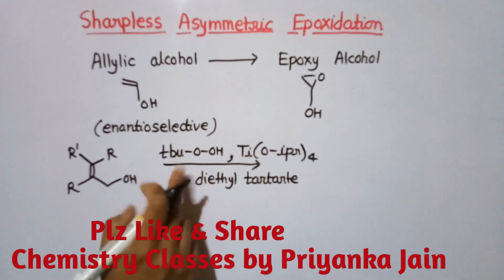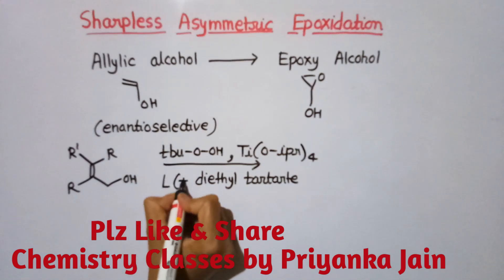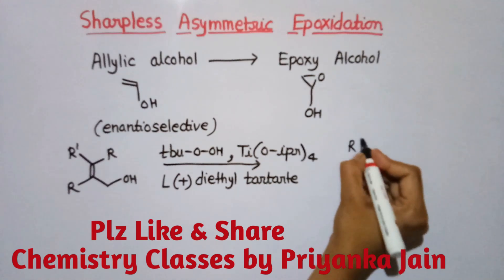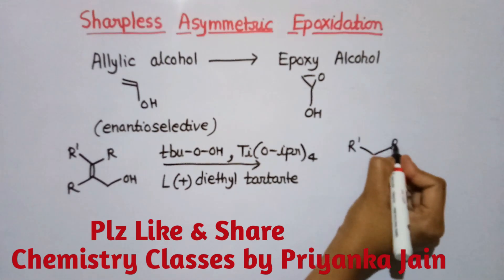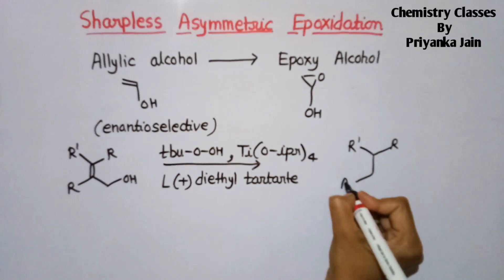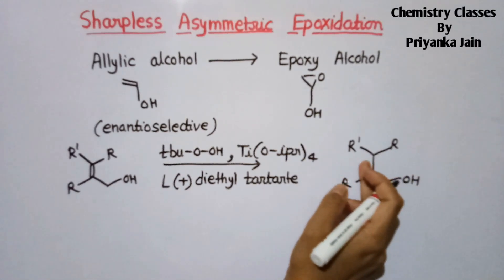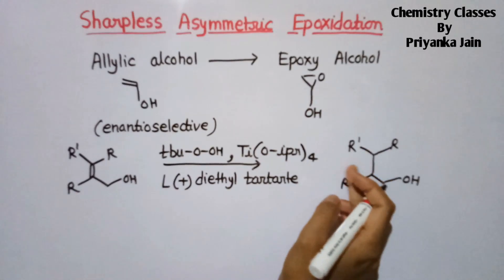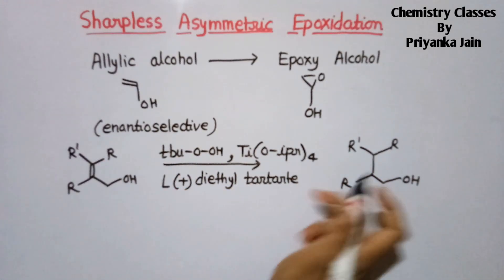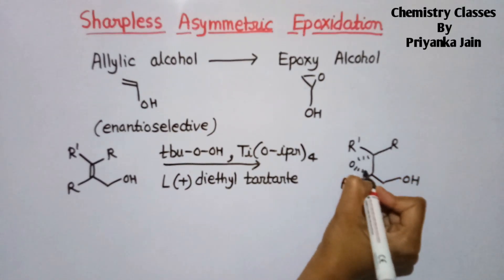Diethyl tartrate has two stereoisomers. If we take the (+) diethyl tartrate, here is our double bond and here is the OH group. We get an epoxy ring, but in the presence of (+) diethyl tartrate, this ring will be formed below the plane.